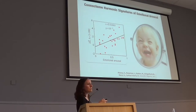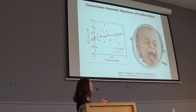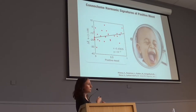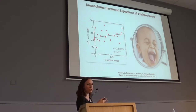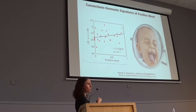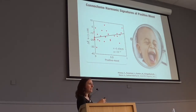But low-frequency suppression wasn't enough to explain the intensity of positive mood. Positive mood actually correlated with energy changes of a broader range of frequencies — a broader range of connectome harmonics — which included both this low-frequency suppression and also the increase of a higher-frequency range.